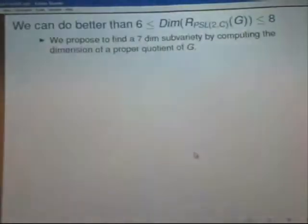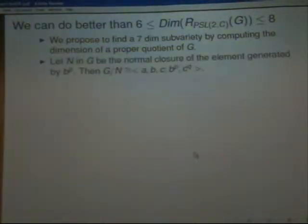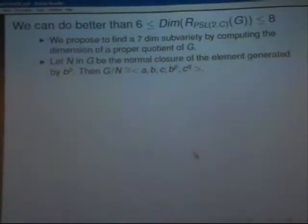So we can do better than that, and we are going to do so. We propose to find a seven-dimensional variety by computing the dimension of the improper quotient of G. And this is where the beginning of the calculus involving space representation arises. It is really the beginning. So let N in G be the normal closure of the element generated by b^p. Then G/N, module normal closure of b^p, is isomorphic to this. You can see that. People can sit down and get from that.